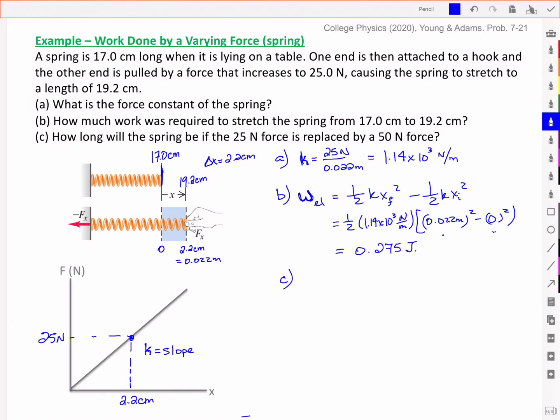Part C says, how long will the spring be if the 25 newton force is replaced by a 50 newton force? So remember, for a spring, f equals kx. I'm then asked to find x, which just means I'm taking my force, dividing by my spring constant. And so this is 50 newtons now instead of 25 newtons.